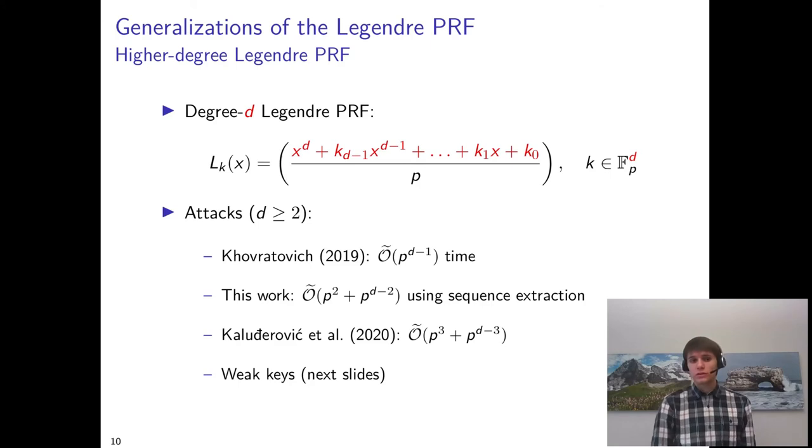In fact, Khovratović did at all improve this to a p to the d minus 3 attack. But we also give in this paper a number of weak key attacks, which I'll present in the next slide, and which are probably more relevant for practical cases.